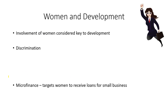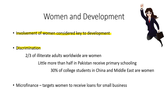Women have made tremendous progress, particularly in developed countries, though less so in poor countries. The involvement of women has long been considered key to development because it improves brain power and puts more capable people to work. Discrimination is still quite prevalent in many poor countries. Two-thirds of illiterate adults worldwide are women. A little more than half of women in Pakistan receive primary school; only 30% of college students in China and the Middle East are women, whereas in America it's over 50%.